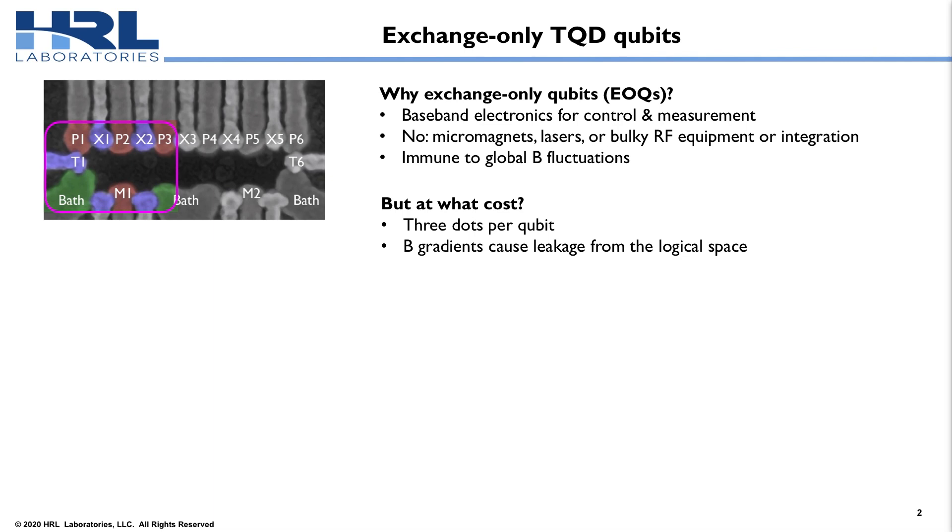They've got a few advantages. We only need baseband electronics for control and measurement, which means we don't need to fabricate things like micromagnets. We don't need lasers. We avoid some of the bulky RF equipment integration hit that other schemes use. And we're also immune to fluctuations on the global B field.